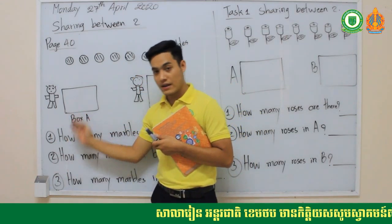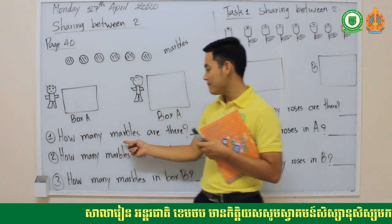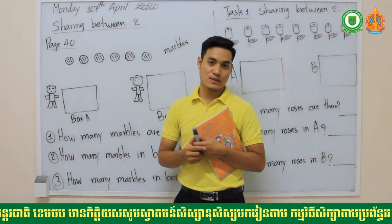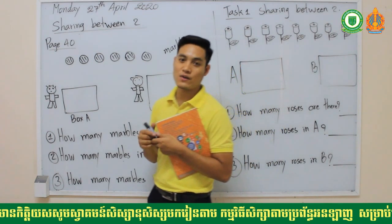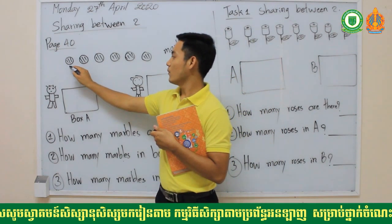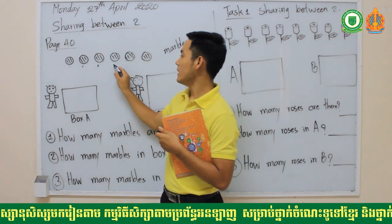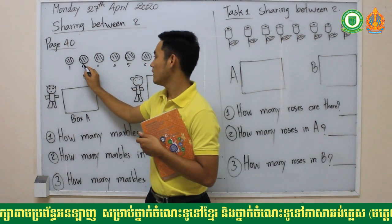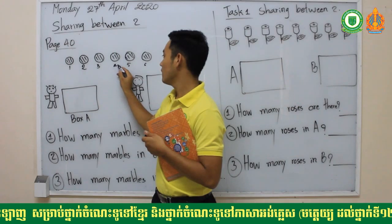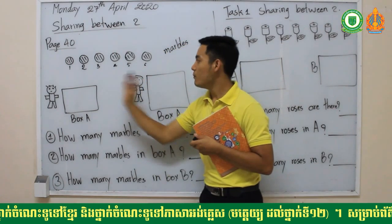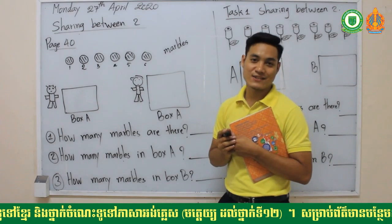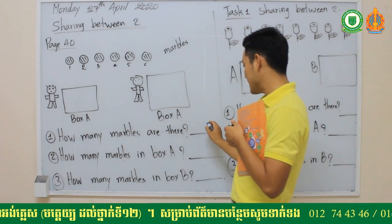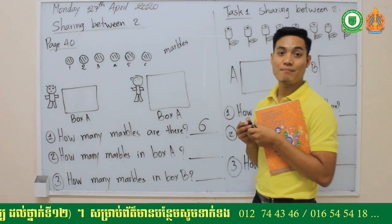So we have three questions. The first one is: how many marbles are there? Let's count together: one, two, three, four, five, six. Let's count again to make sure: one, two, three, four, five, six. So how many marbles are there? The answer is six marbles.